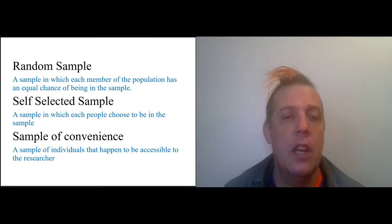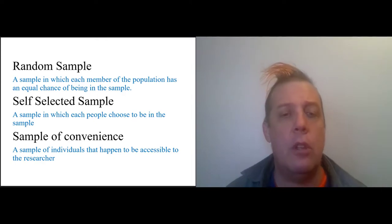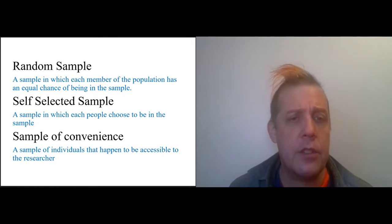Another kind of sample is the sample of convenience. This is a sample of individuals that just happened to be accessible to the researcher. This is really common in psychological surveys. A lot of our body of knowledge of psychology was conducted by studying first-year undergraduates in intro to psych courses, and this also has a bias to it.